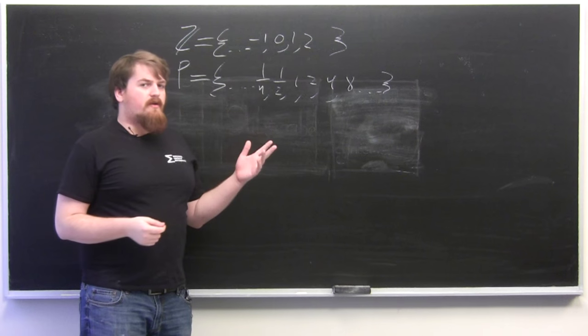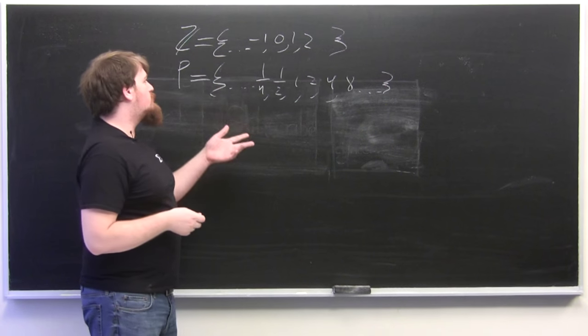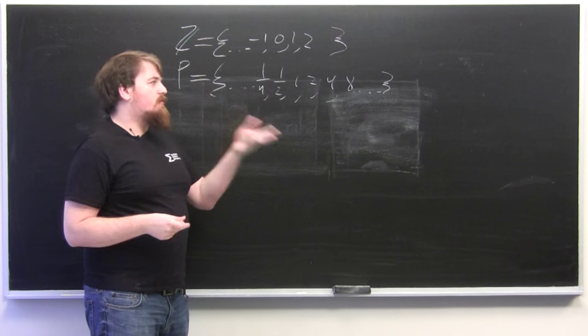So, as you might be able to figure out, these groups have similar structures. So in Z, you would say that 2 plus 3 equals 5.